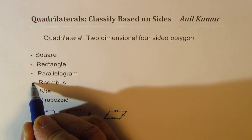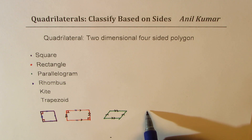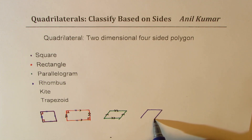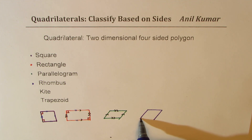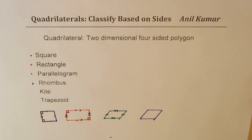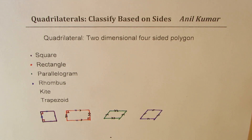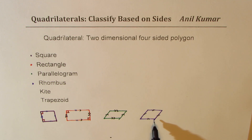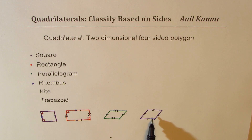Let's talk about rhombus. In the case of a rhombus, it is more like a square but not intersecting at 90 degrees. As you can see, it is also a parallelogram. All sides are equal, just as in the case of a square. However, we do not have 90-degree angles — that makes a huge difference. The diagonals are not of the same length as in a square, but they do intersect at 90 degrees, which we will learn in another part of the video.